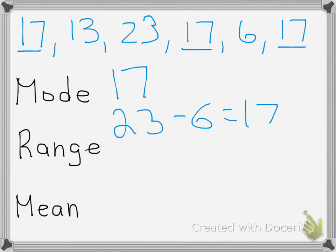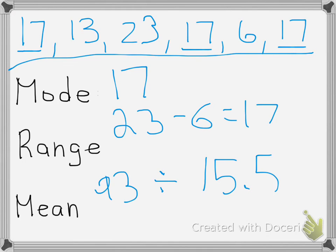The mean, you add up all the numbers and divide by how many numbers there are in a set. The total sum of this set of numbers is 93. There are six numbers. So 93 divided by 6, the answer to mean is 15.5.